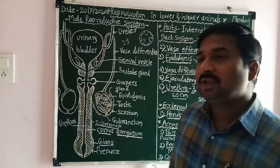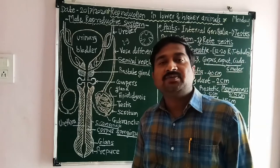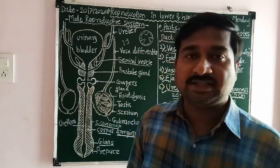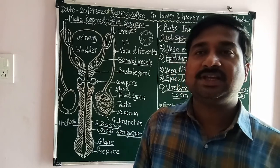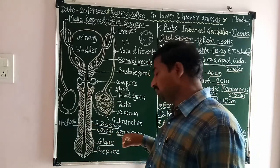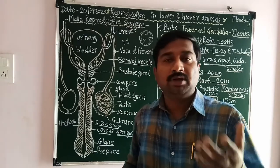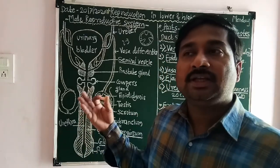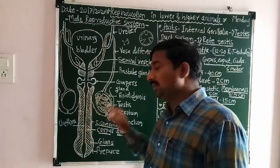The corpus spongiosum has cavities which are filled with blood at the time of sexual excitement, and due to that the erection of the penis takes place. The spongiosum acts as the main erectile tissue.